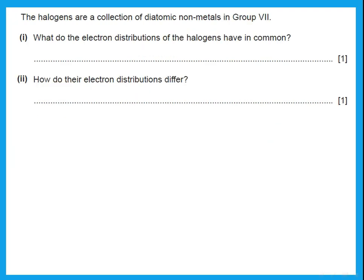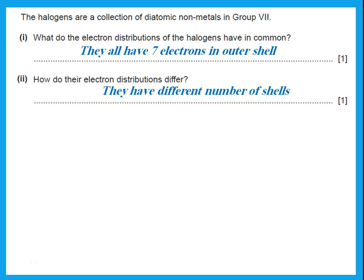The halogens are a collection of diatomic non-metals in group 7. What do the electron distributions of the halogens have in common? If they are all in group 7, that means they all have 7 electrons in outer shell. Now, how do their electron distributions differ? What is the difference between the numbers? They all have 7 in the end, but they have different number of shells.